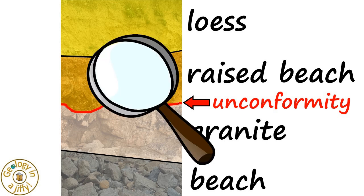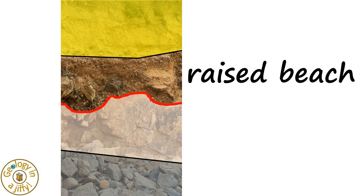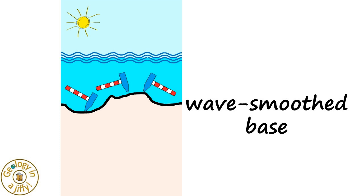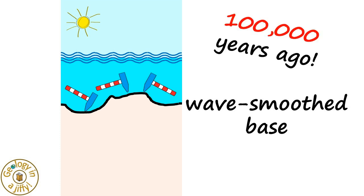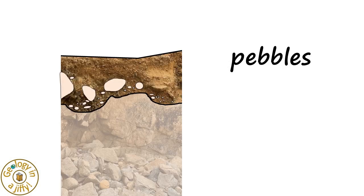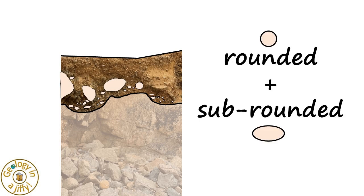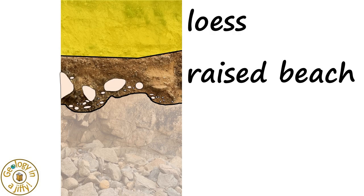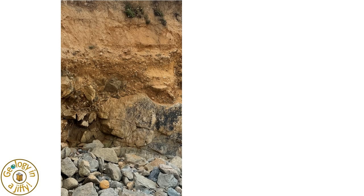Further study of this cliff shows the granite underlying the beach with its wave-smoothed surface, carved when sea levels were higher — in this case around 100,000 years ago. In the raised beach we see a sandy matrix with rounded and sub-rounded pebbles and boulders, shaped by abrasion as waves rolled them in the ancient sea. Above the raised beach deposits are loess and head materials deposited during a glacial phase when sea levels were much lower.